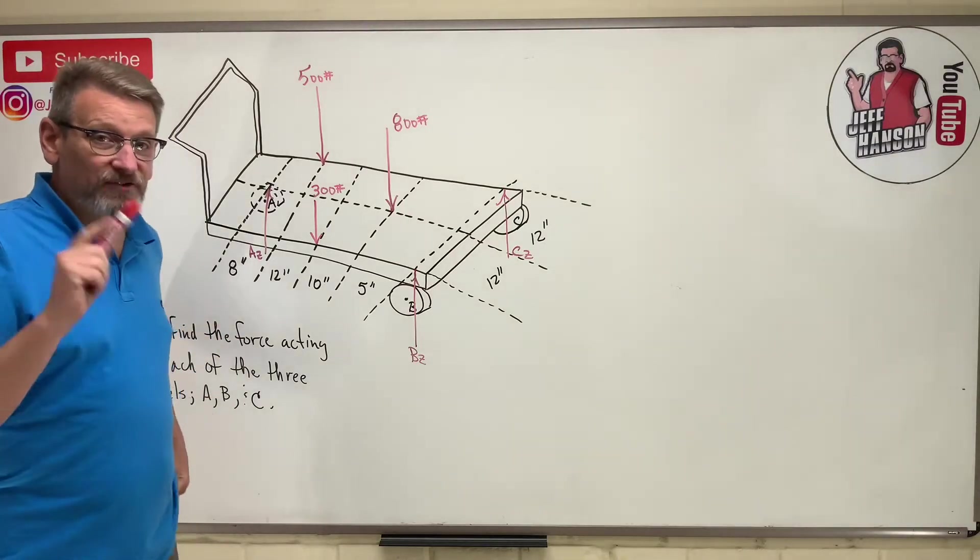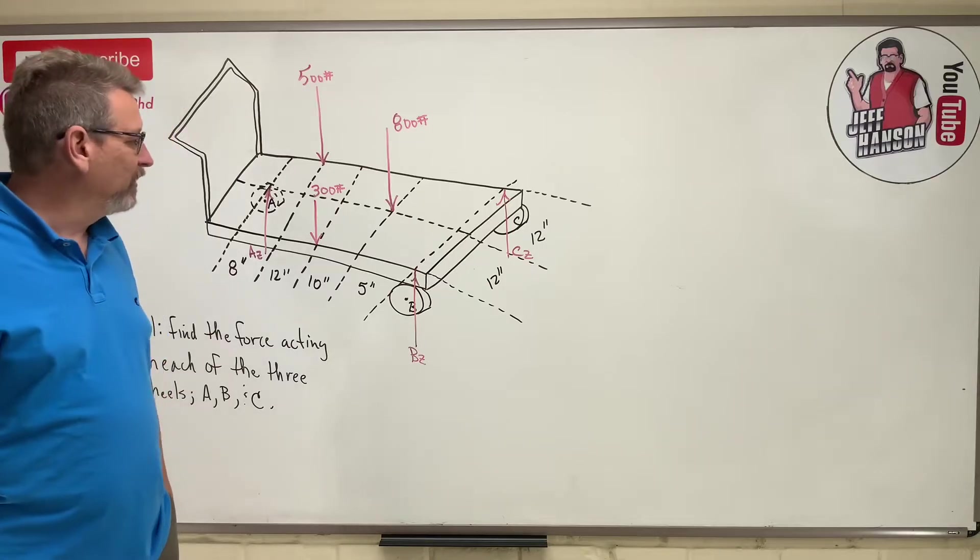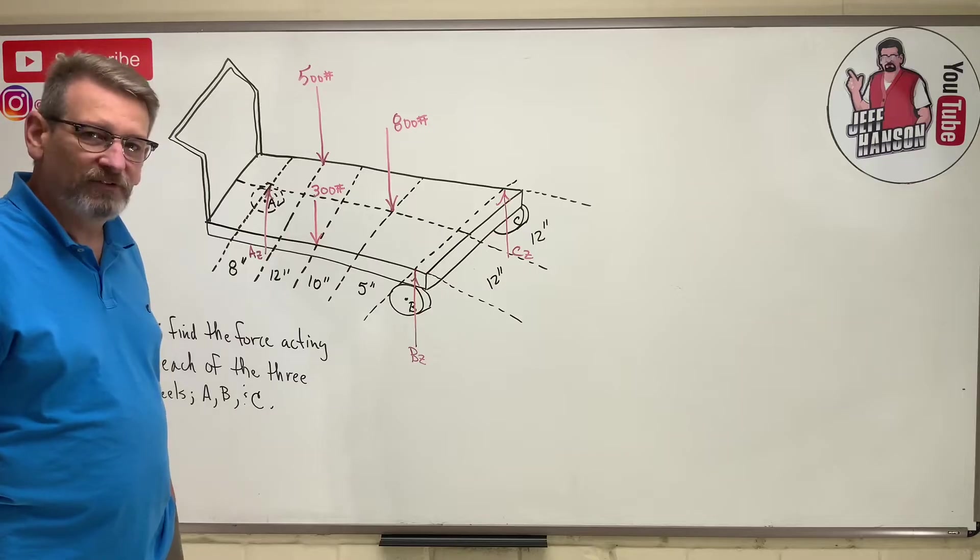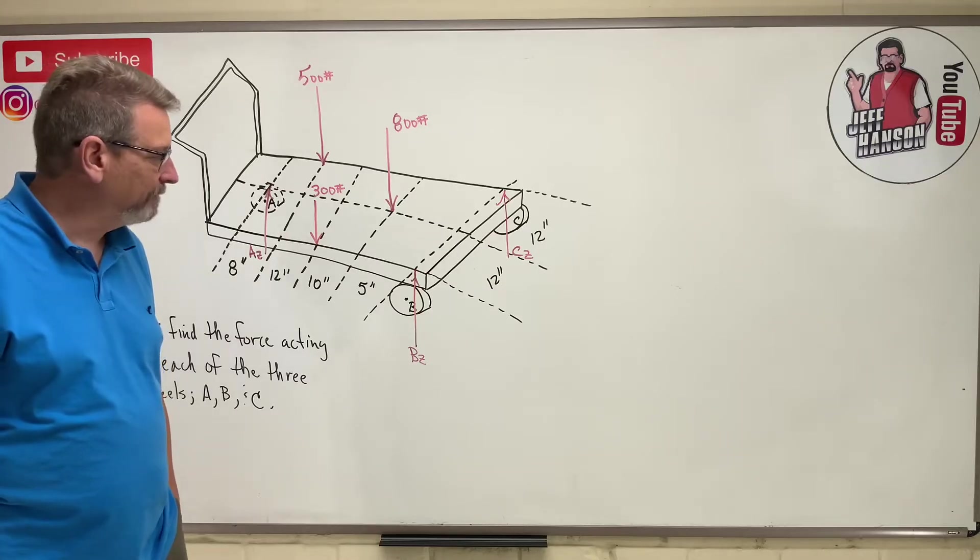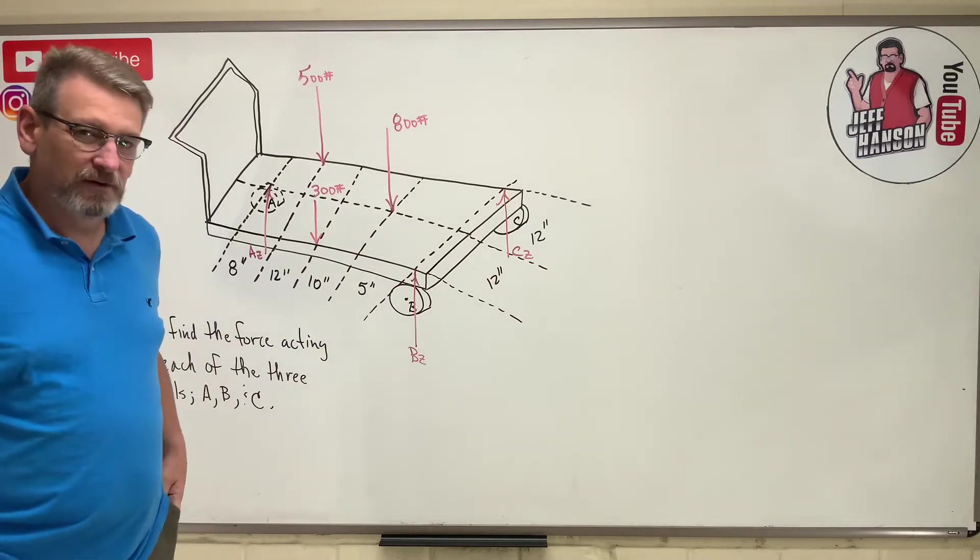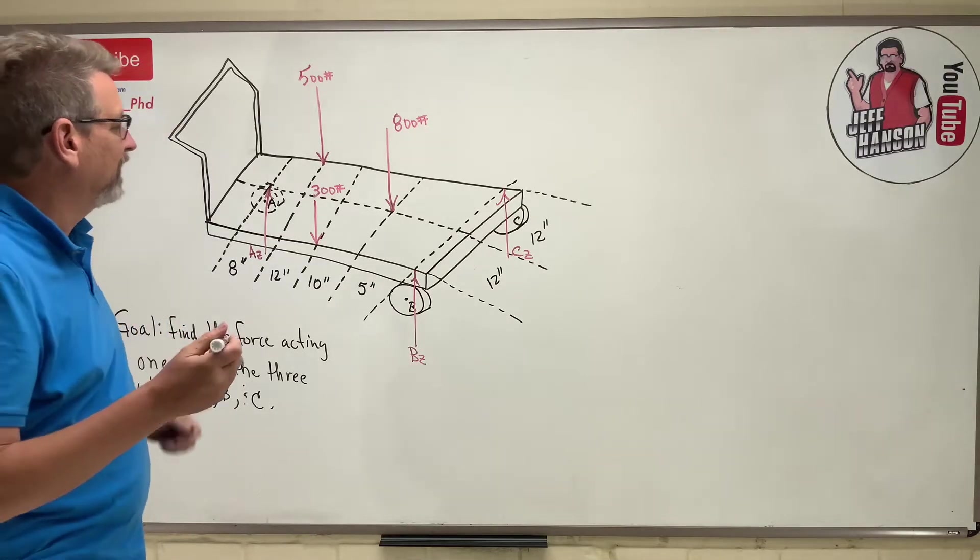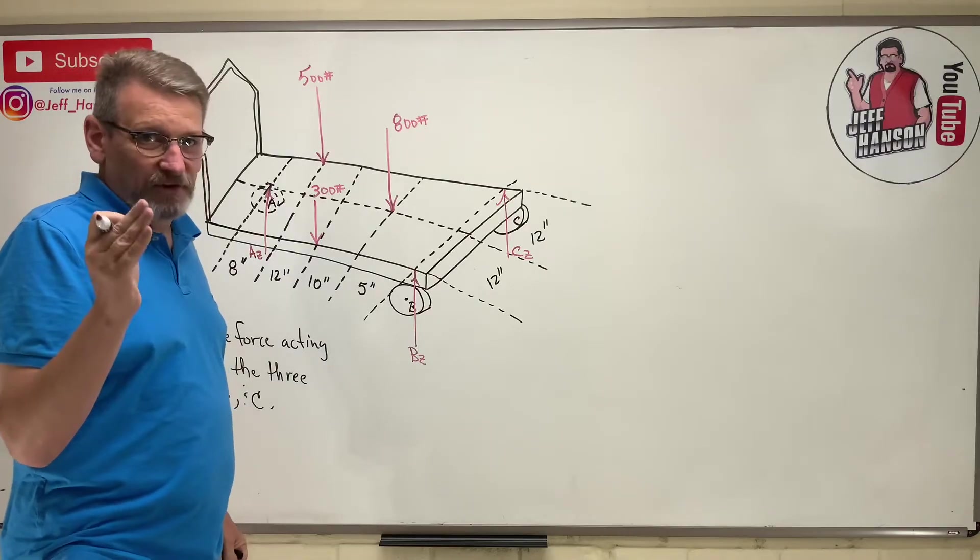Okay, now you'll notice something's missing here. I'll tell you what's missing: a coordinate system, that's what's missing. So the coordinate system is not here, so what does that mean? That means we can pick our own, doesn't it?